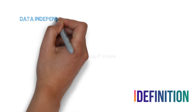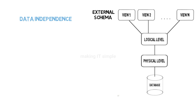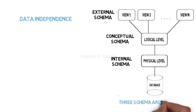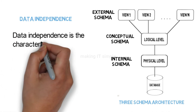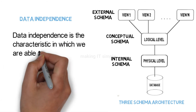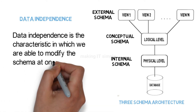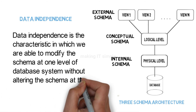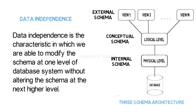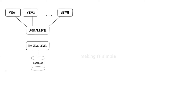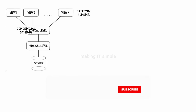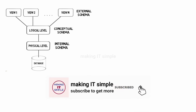In the video on data abstraction, we saw that data is managed at different levels and it has different schemas. The definition states that data independence is the characteristic in which we are able to modify the schema at one level of a database system without altering the schema at the next higher level. As we have seen previously, a database is represented using the three-schema or three-level architecture.